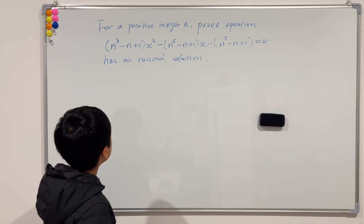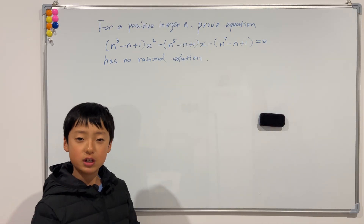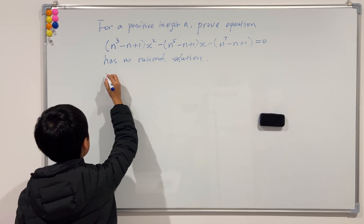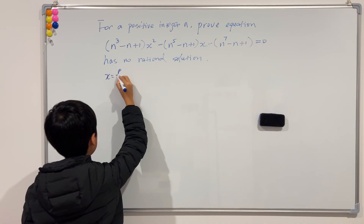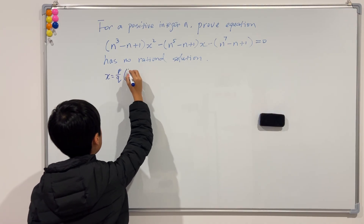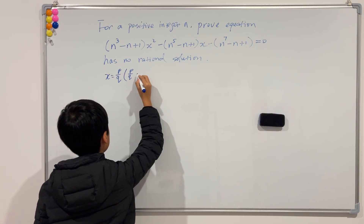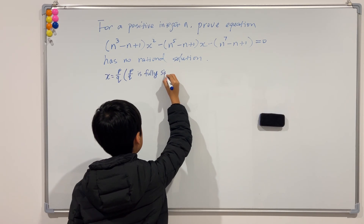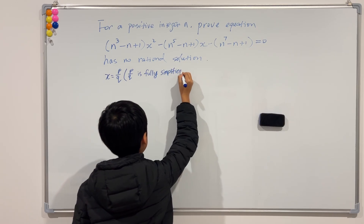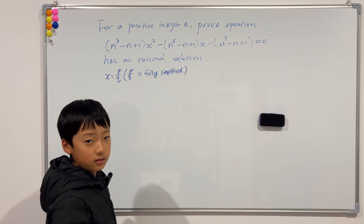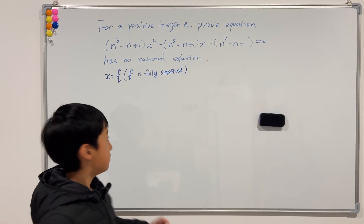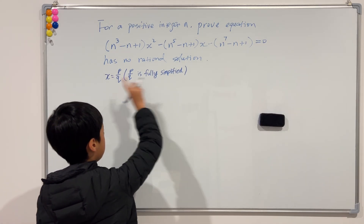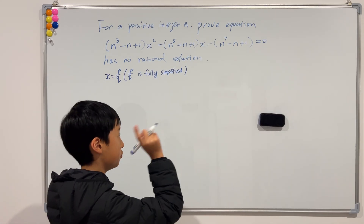So, how do we contradict this? Well, we can just assume there is a solution x equals p over q, and just a note that p over q is fully simplified. So if x equals p over q is the solution, then that means that if we just plug it into here, then this must satisfy that this is equal to 0.